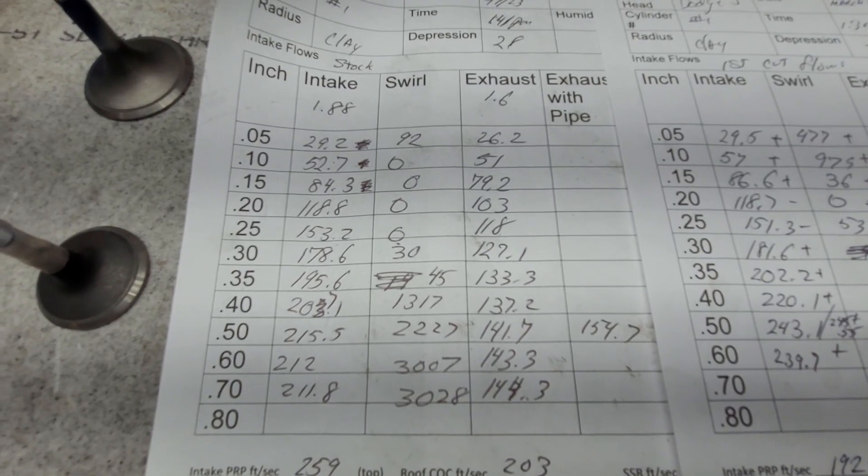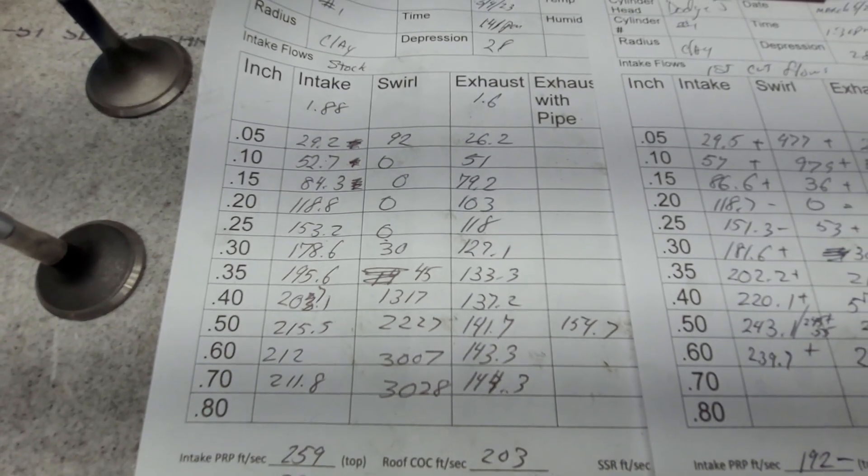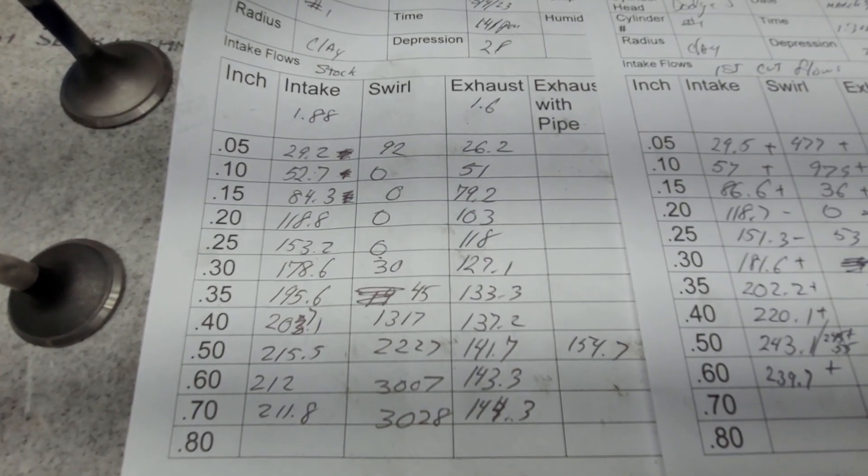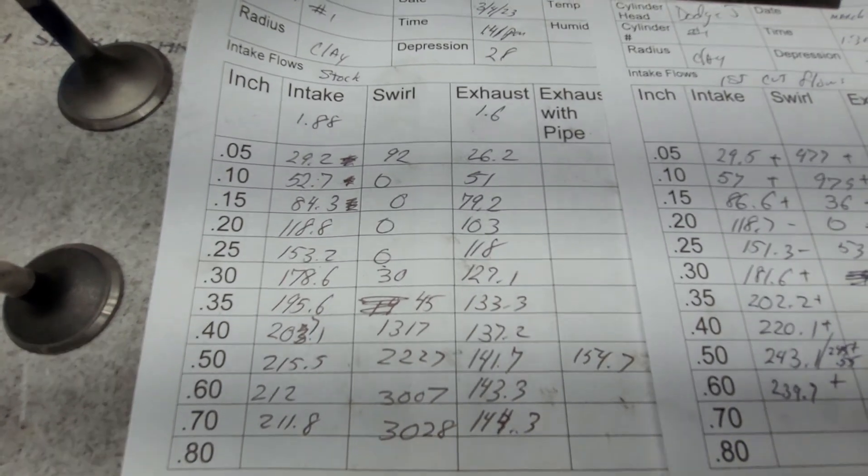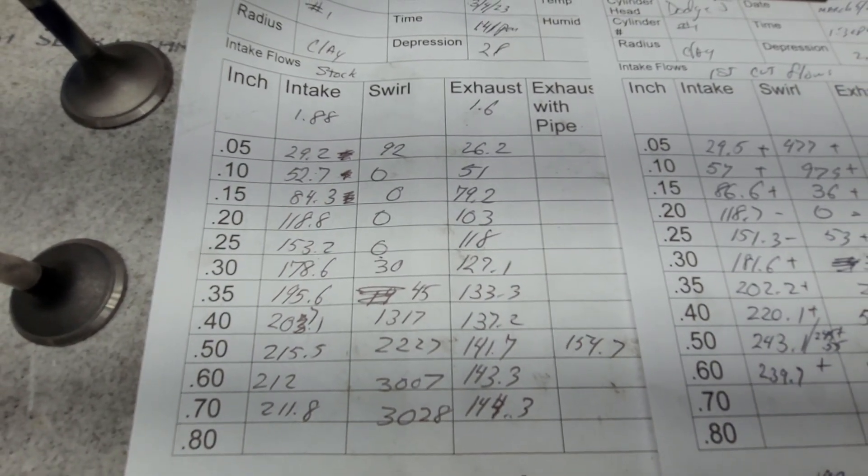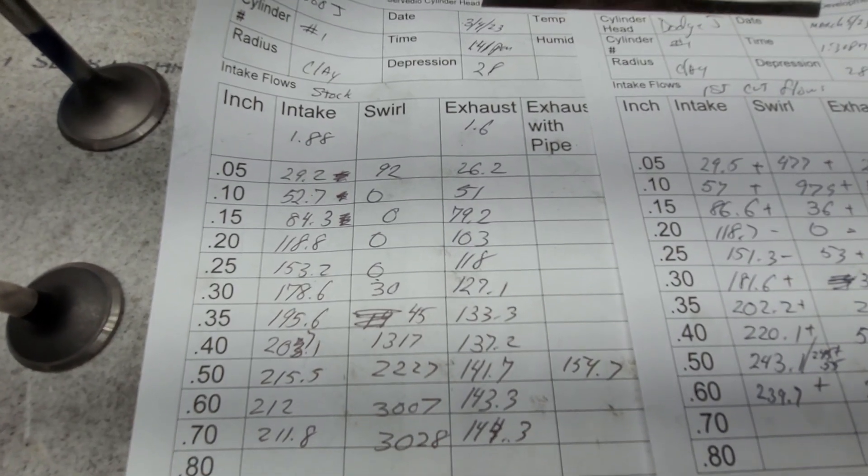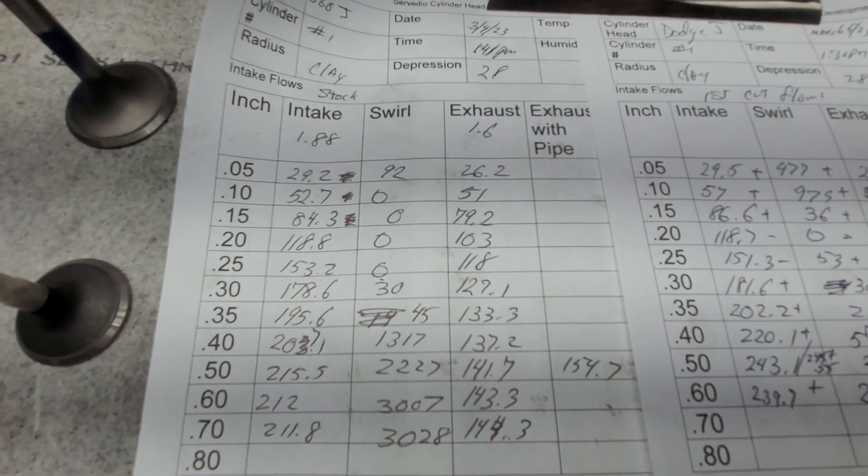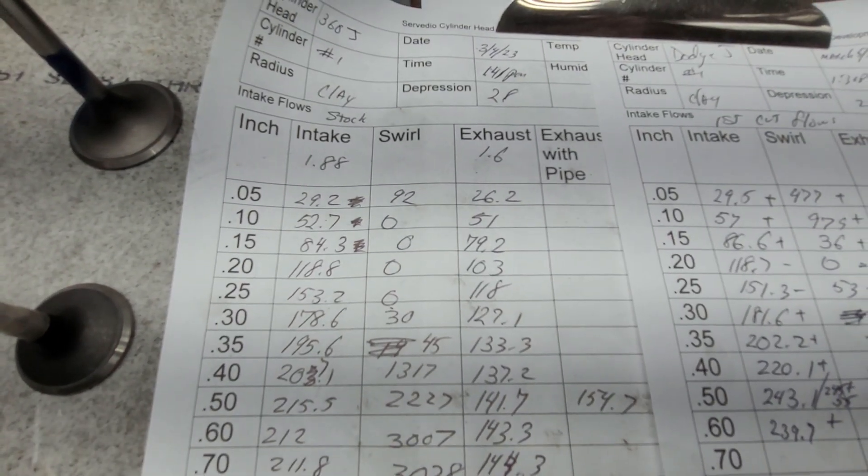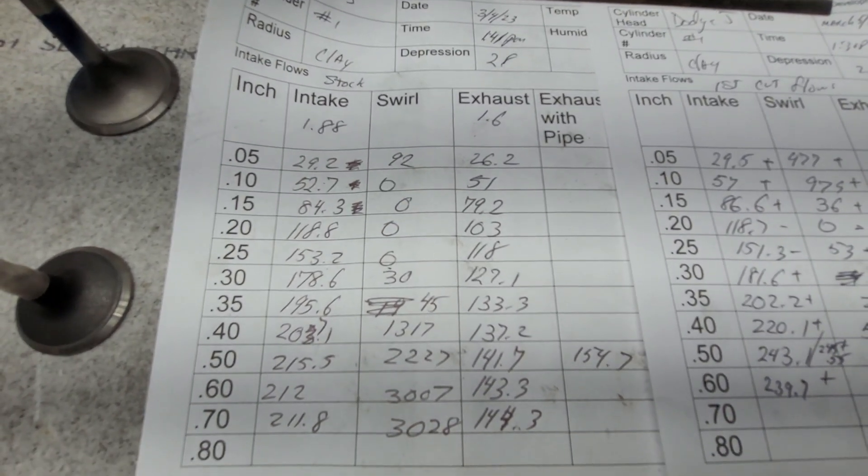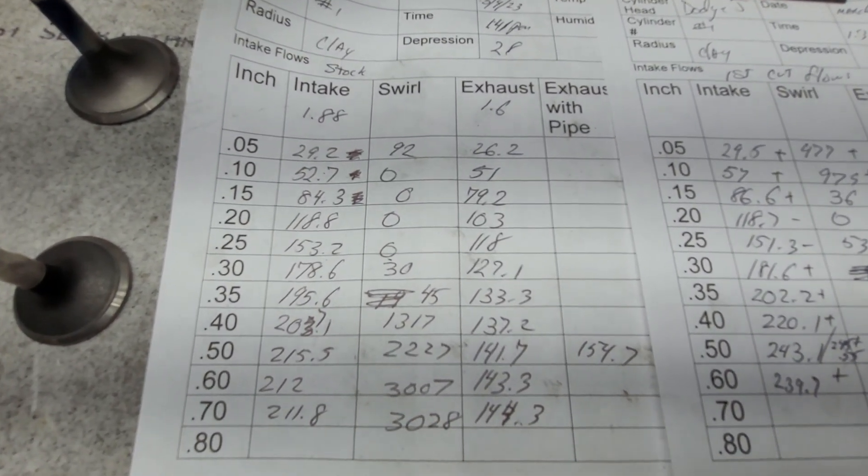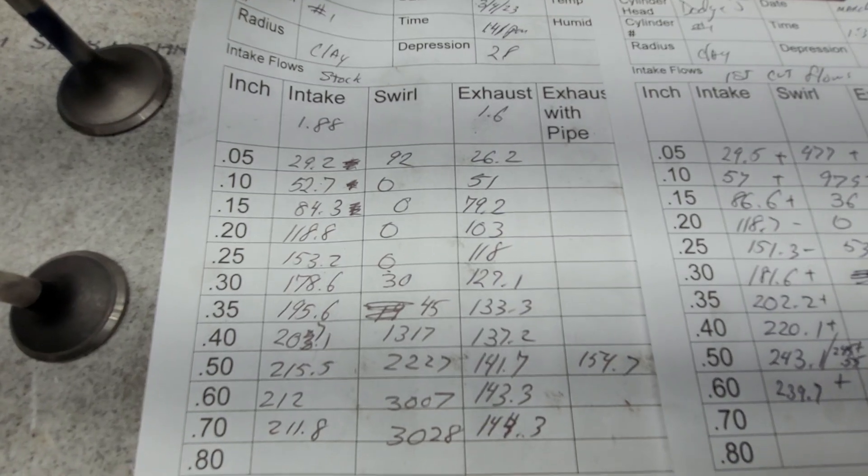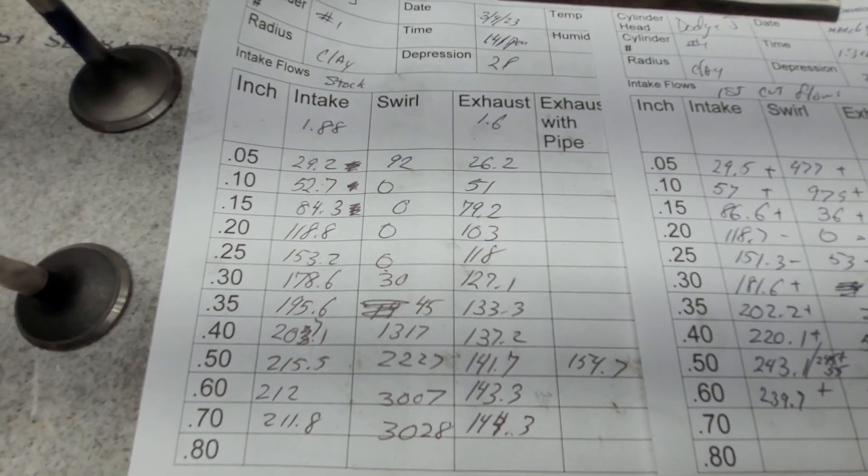Okay, that's what the stock J heads did. They did about 215 CFM at 500, 141.7 at 500, 154.7 with a pipe. Not bad, pretty close to what a Fuelie does. Fuelie Chevy is about 208/150. So for a bone stock design, it's really not bad. Now what can we say about the swirl? It's completely dead in the lower lifts and then you can see when it starts skipping over the short side radius it goes way up.